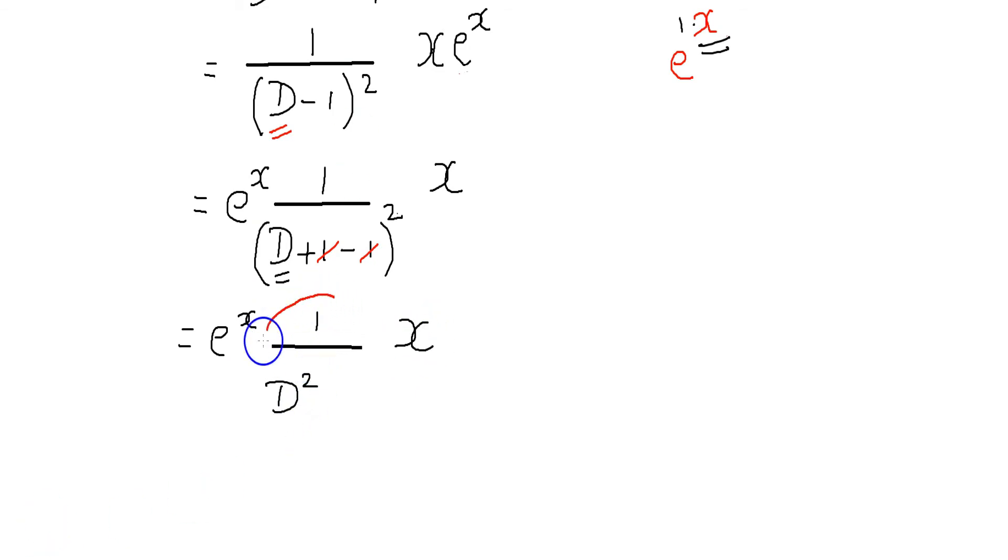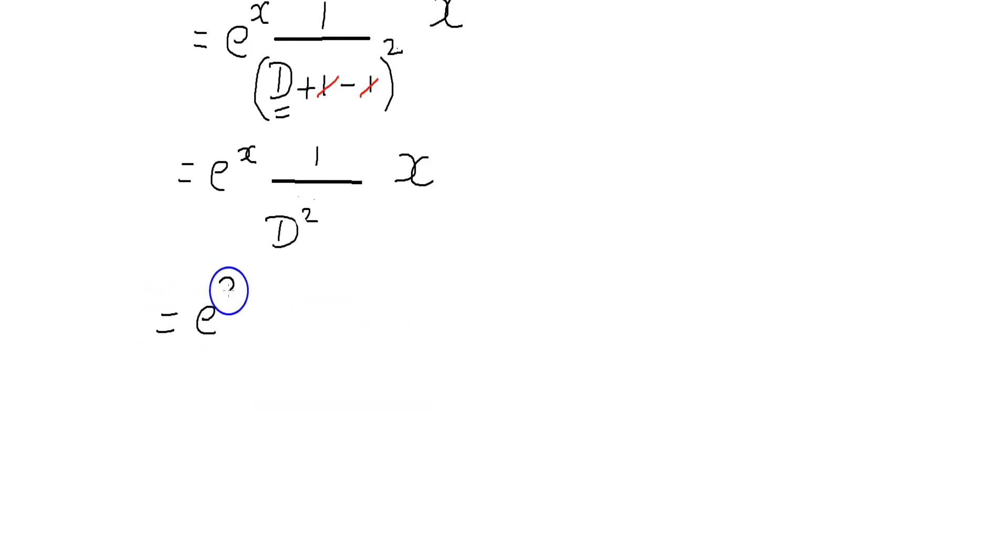Here we have D² on denominator. Then we integrate the polynomial x with respect to x two times.